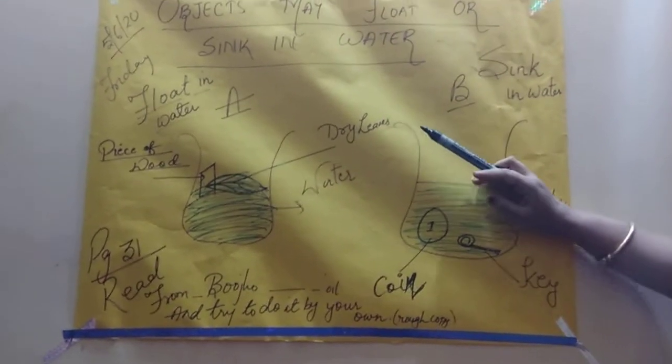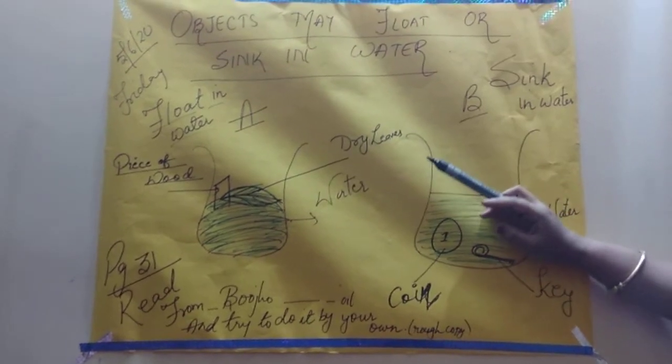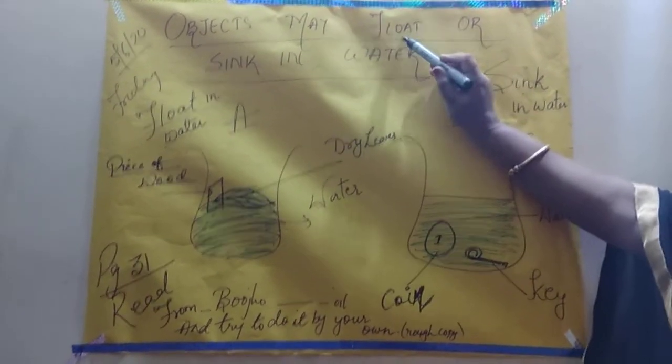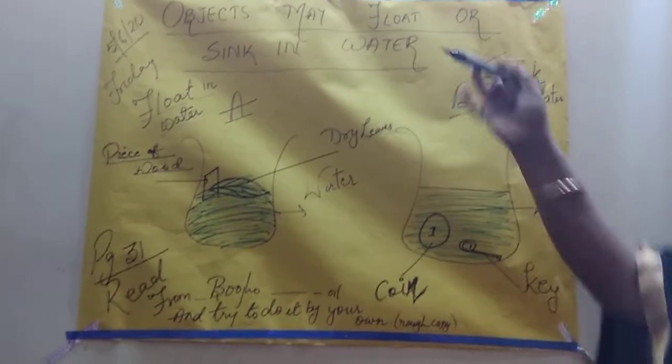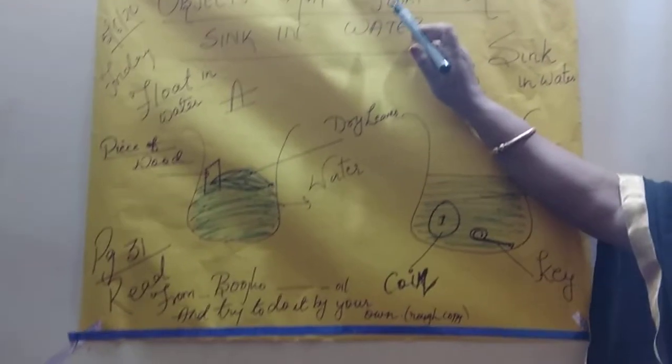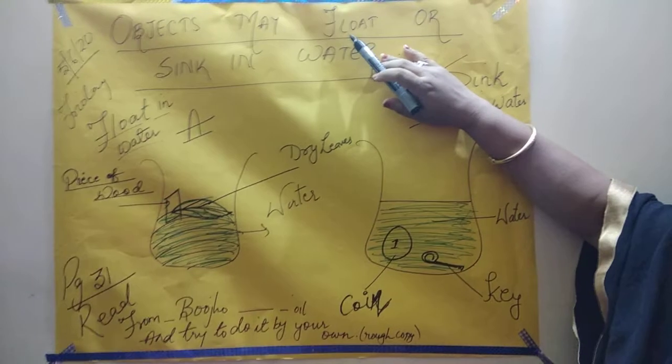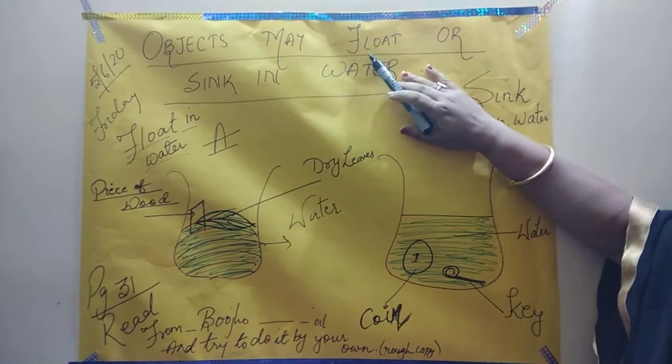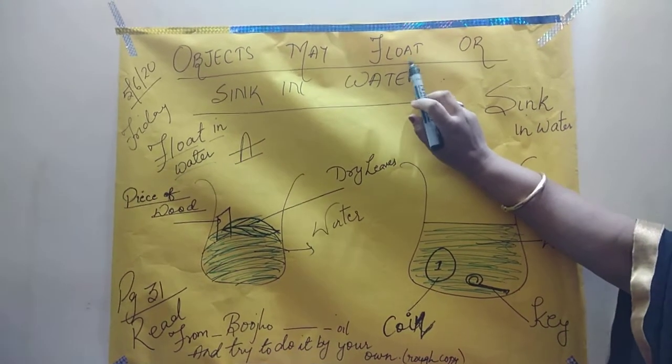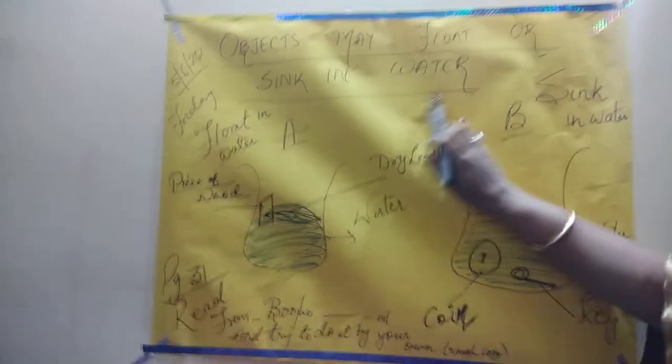Let me explain what is the meaning of float and what is the meaning of sink. Float means terna. Floating means a thing which is lighter than water. So float means objects which are lighter than water.